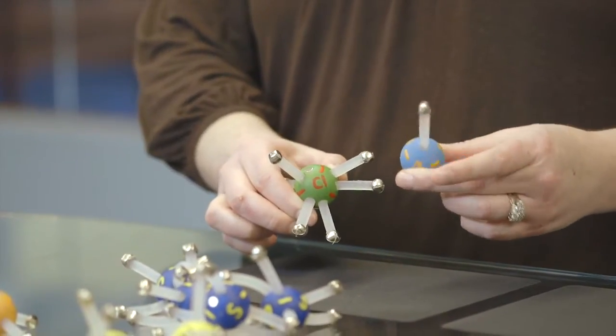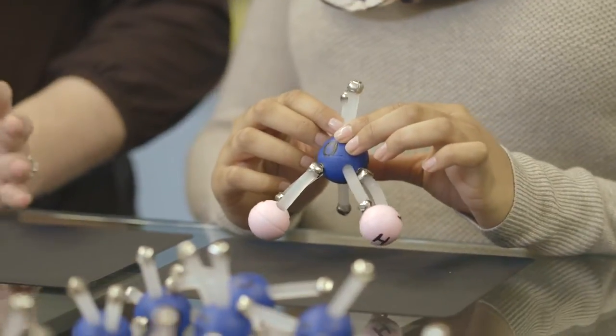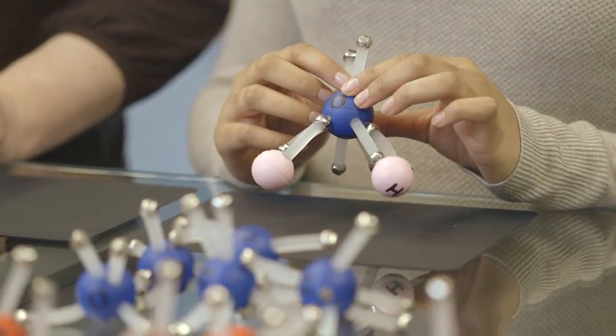Bonding sites are represented by magnets on the nucleus. Here, we create a water molecule by bonding this single oxygen atom with these two hydrogen atoms. When all of the bonding sites have been filled, the molecule is complete.